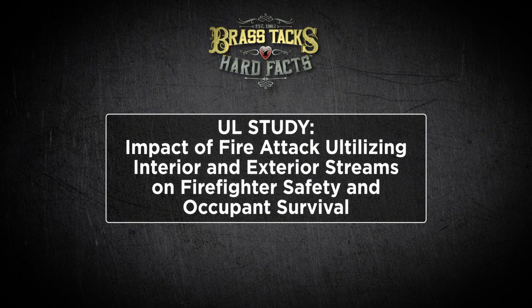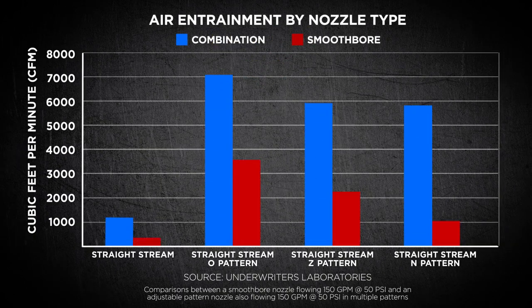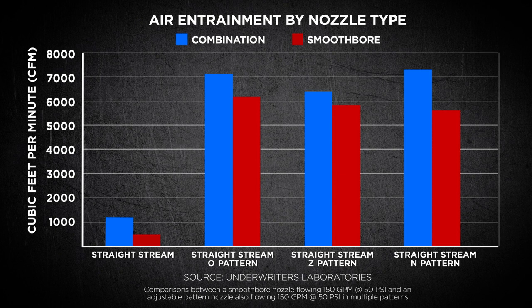Consider the following data recently published by Underwriters Laboratories. The title of the research is 'The Impact of Fire Attack Utilizing Interior and Exterior Streams on Firefighter Safety and Occupant Survival.' As this bar graph shows, the air movement caused by one type of nozzle held stationary and then the same nozzle moved in a typical fire ground fashion shows vastly different amounts of air movement. It shows that our commonly used nozzles and fire attack techniques move considerable amounts of air inside the fire compartment.